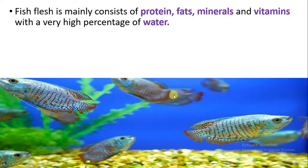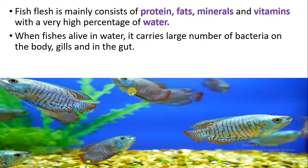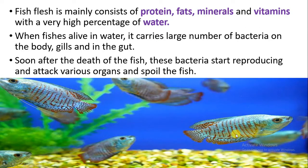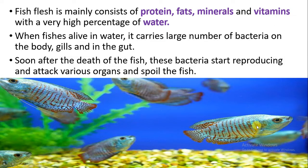When we talk about fish, the flesh of fish has a good amount of protein, fats, minerals, vitamins, and also water. When the fish is alive in water, at that time it already contains a large amount of bacteria. The bacteria is found in the body, in the gills, and also in the alimentary canal, that is the gut. So as when the fish dies, because of the bacteria present in the body, gills, and gut, the decomposition process starts very soon. The bacteria start reproducing and attack on various important organs, spoiling the fish in a very less time.